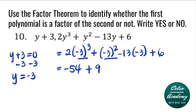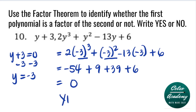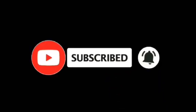Next, negative 13 times negative 3 is 39, and plus 6. Negative 54 plus 9 is negative 45, negative 45 plus 39 is negative 6, and negative 6 plus 6 is 0. Since the answer is 0, this means that y plus 3 is a factor of the second polynomial. Thank you for watching and please consider subscribing to the channel at Celso Academy.